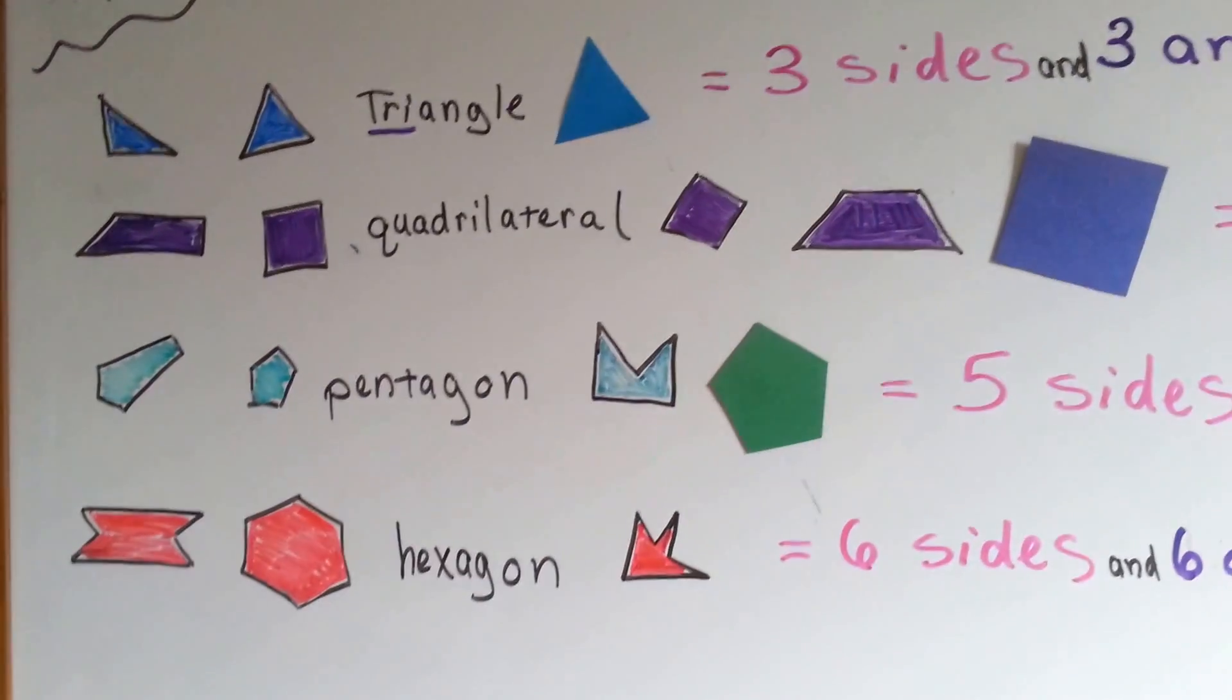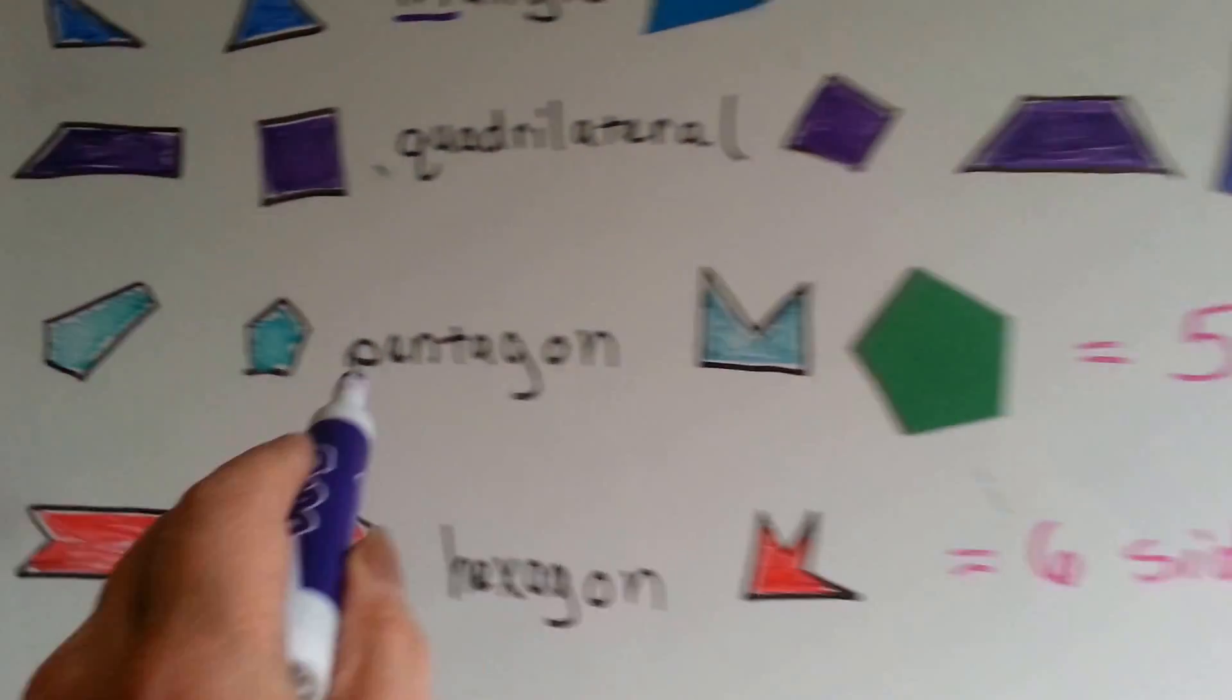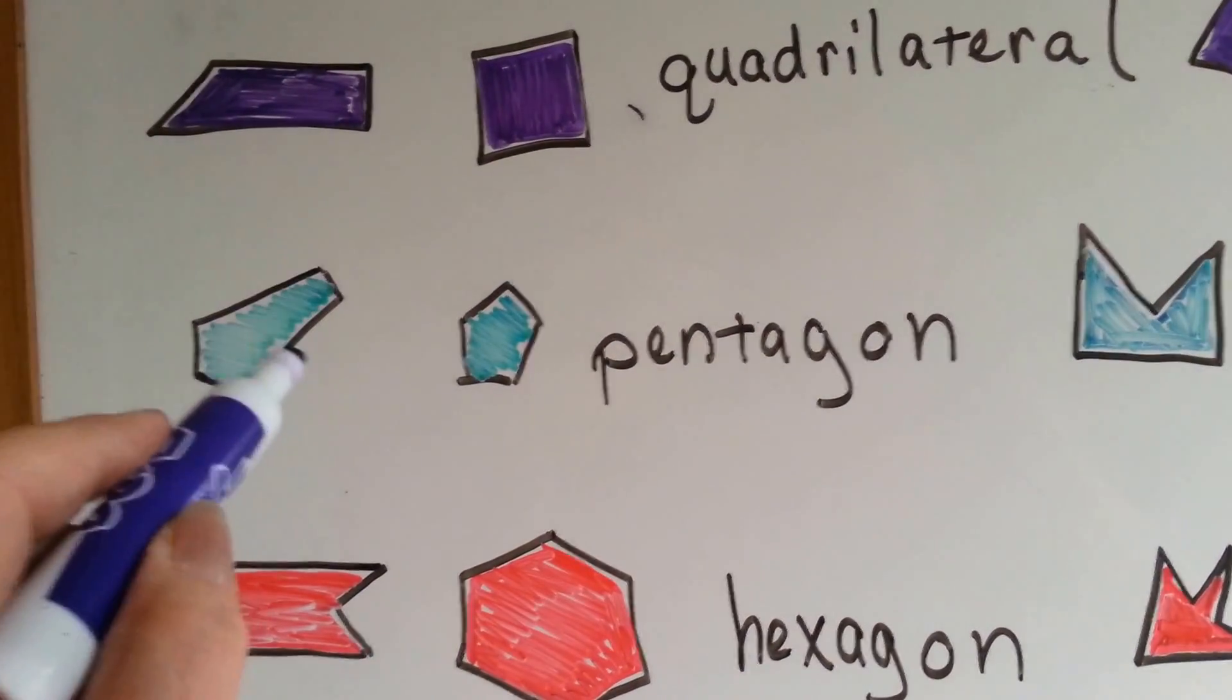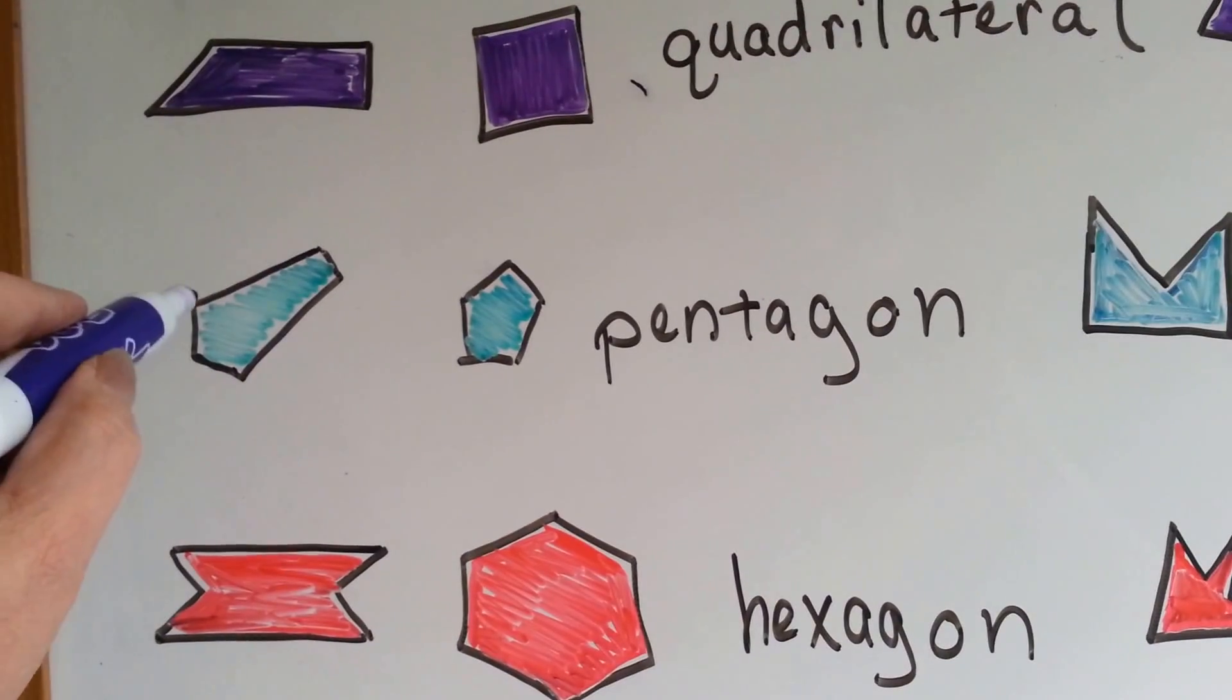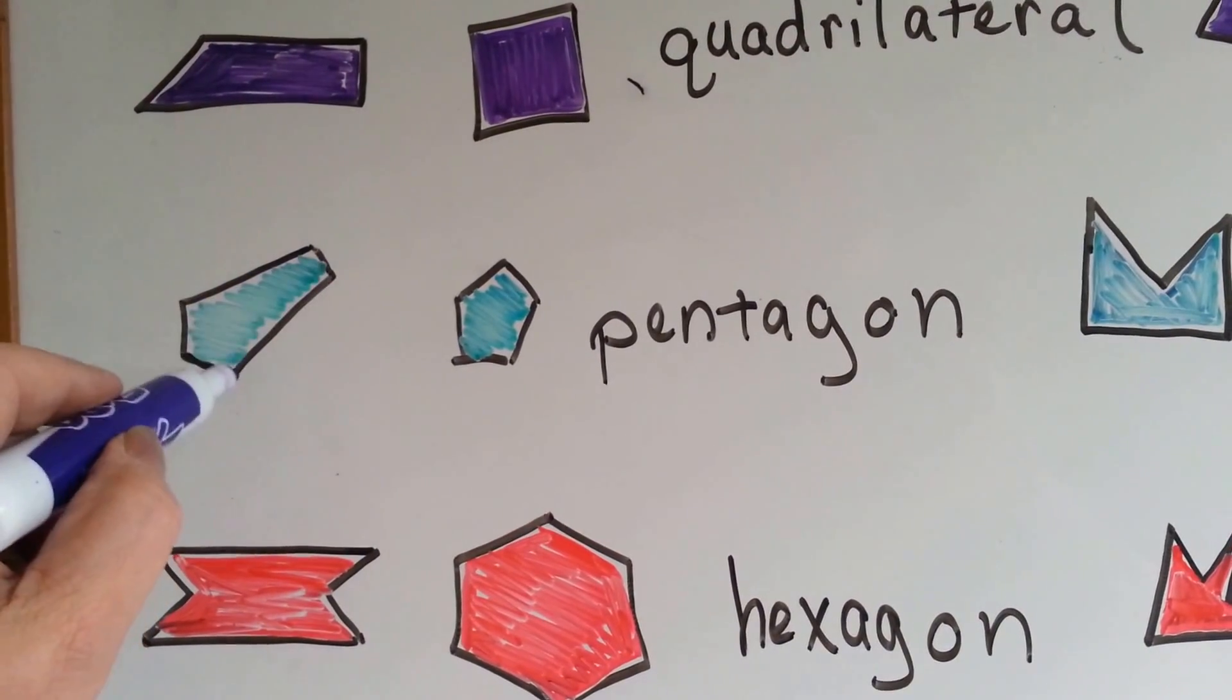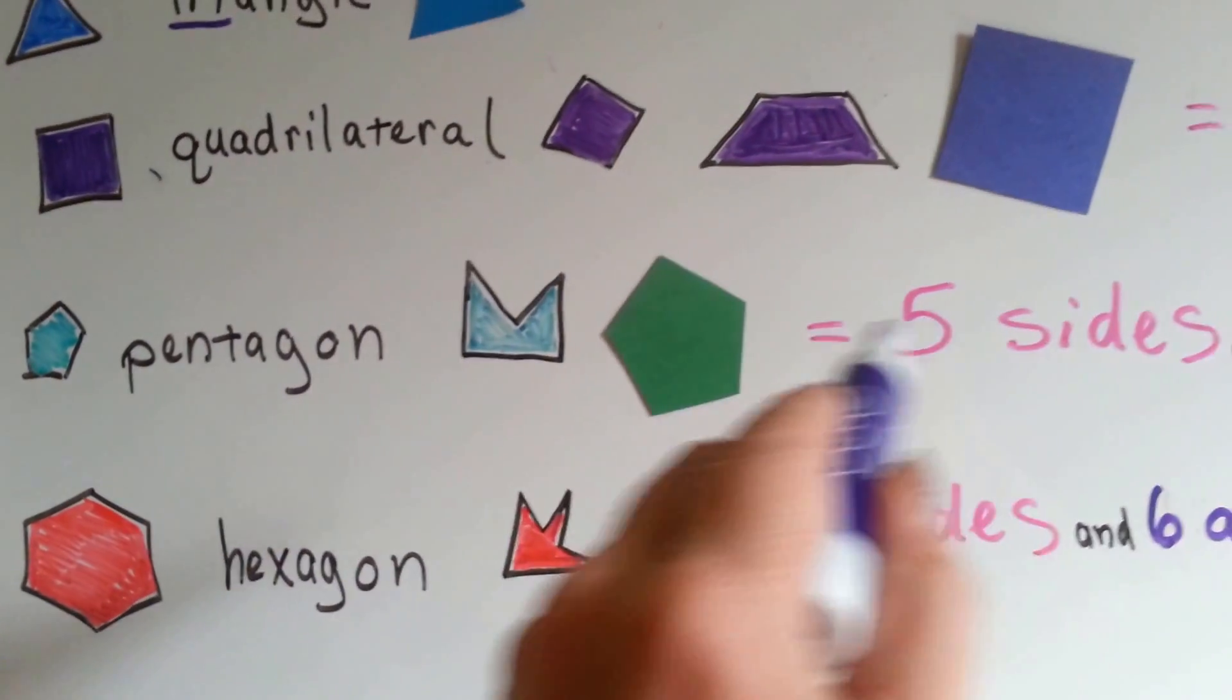A pentagon has five sides and five angles. One, two, three, four, five sides. One, two, three, four, five sides. And one, two, three, four, five angles. Five sides and five angles.